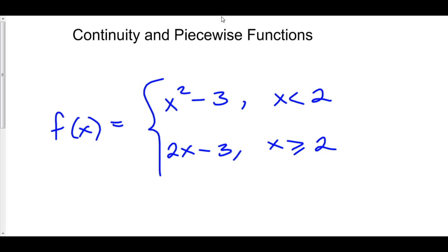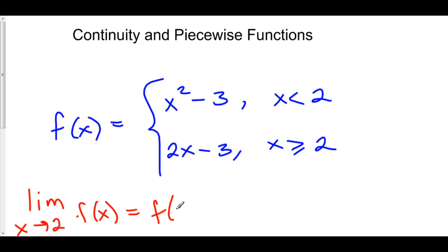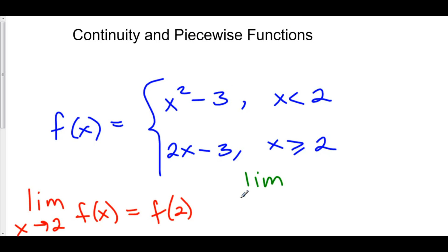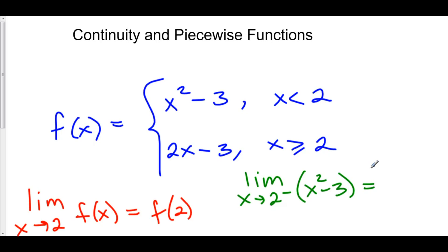To check for continuity, we need the limit as x approaches 2 of f of x to equal f of 2. First, let's check our limit — it only exists when the left-hand limit equals the right-hand limit. The limit as x approaches 2 from the left: we want x to be less than 2, so we're using x squared minus 3. Plugging in: 2 squared is 4, minus 3 is 1.